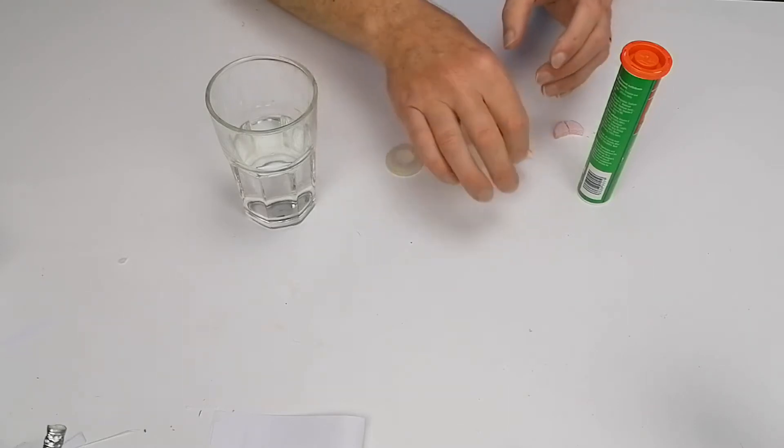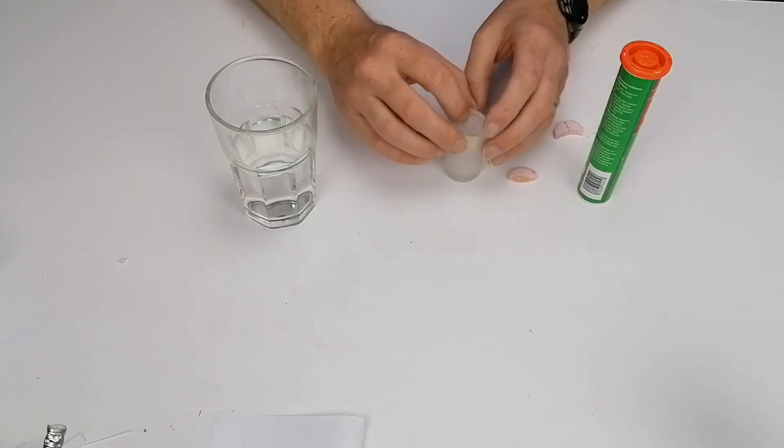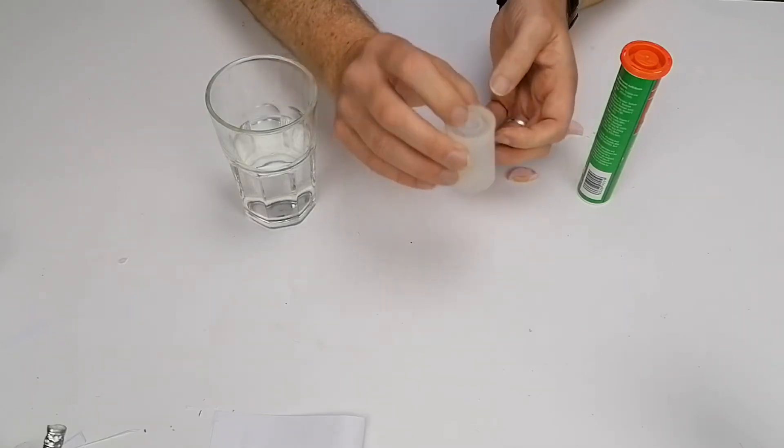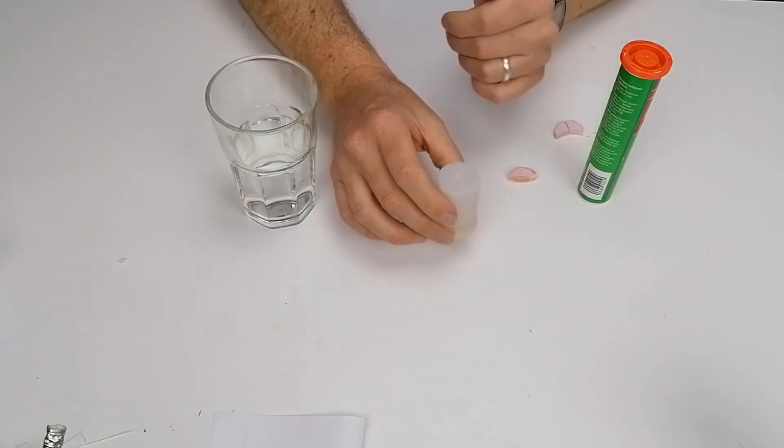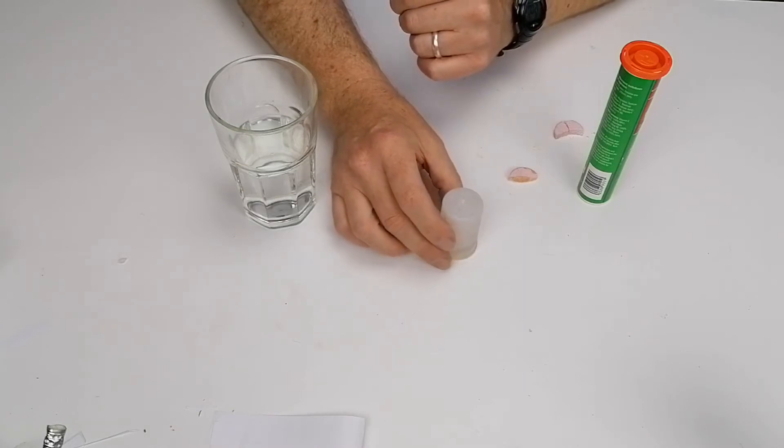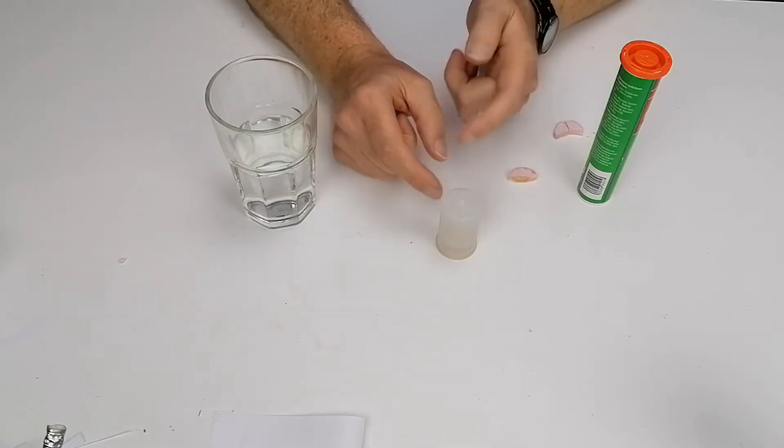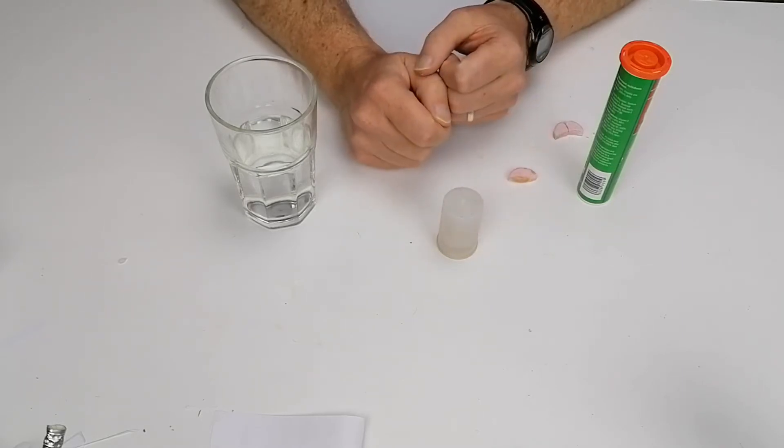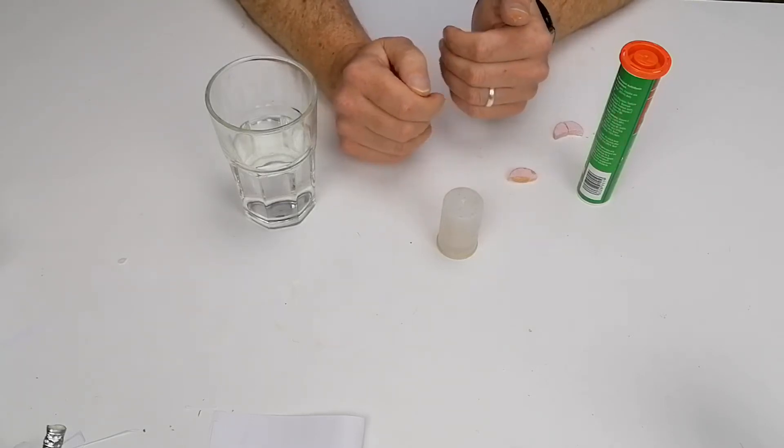Put this into the film canister, put the lid on, snap it down. Make sure it snaps, you need to hear that pop. Give it a quick shake, turn it upside down, leave it down on the ground. When you do, this thing will pop and it goes quite high. This would go about the height of a two-story building, so you need to make sure that the kids and everybody stays well back from when it pops.